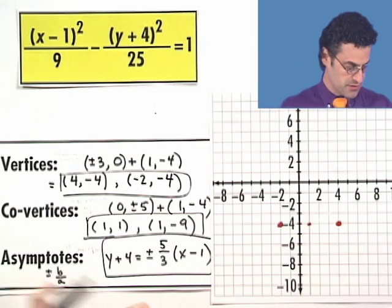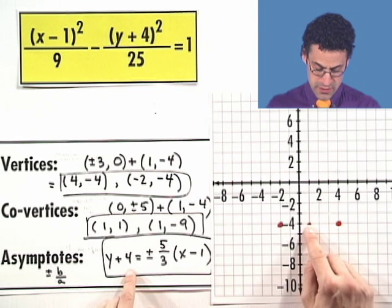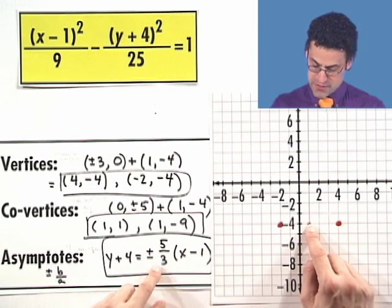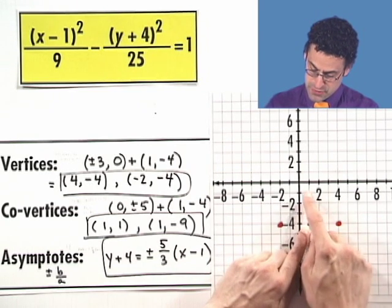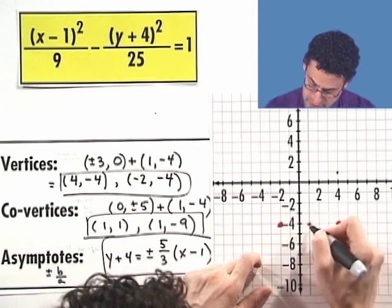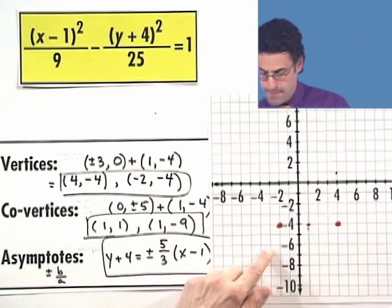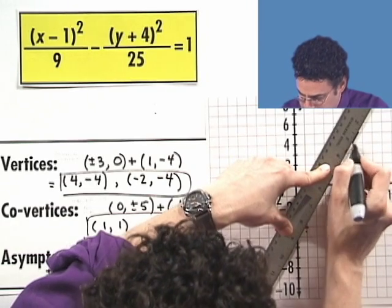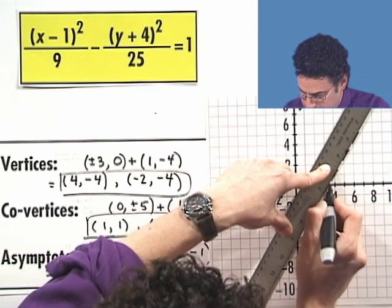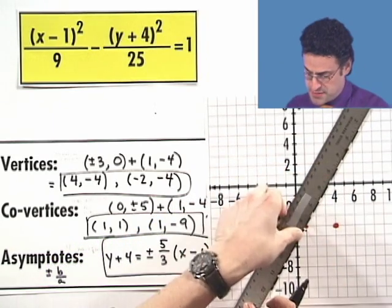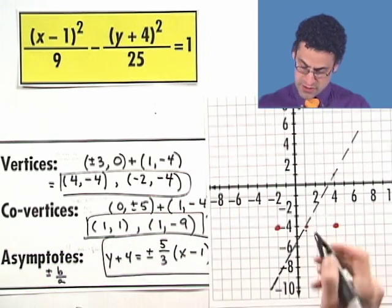If I now put in the asymptotes, so if you graph these two lines, they pass through 1 negative 4 and have a slope of 5 thirds first. So 5 up: 1, 2, 3, 4, 5. 3 over. Goes through that point and this point. Connect with the straight edge. A lot of work in this, right? No one said graphing hyperbolas is a piece of cake. That's because a hyperbola is not a piece of cake. It's a hyperbola.